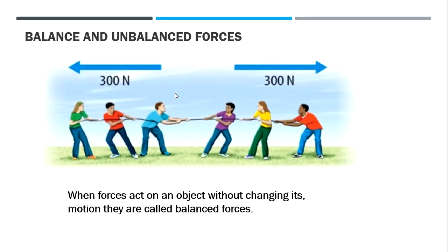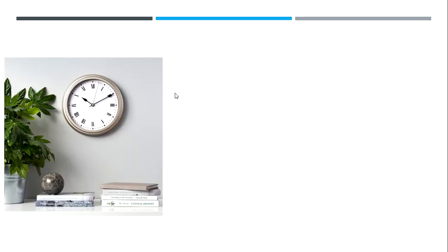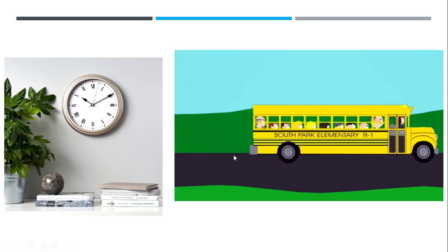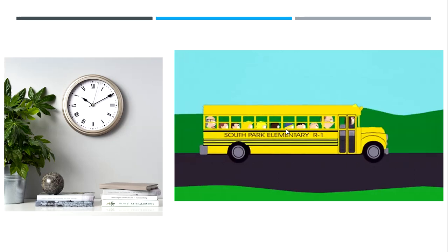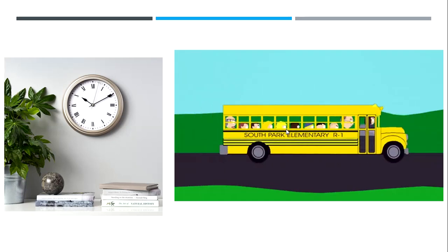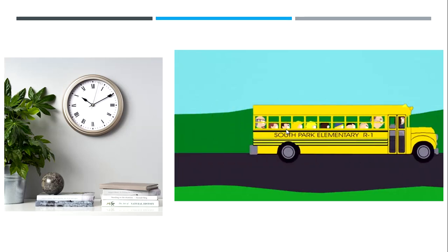There may be more than one pair of balanced forces acting on an object. For example, a clock screwed into the wall — gravity pulls it down, but the screw keeps it in place. Balanced forces can work on stationary objects like this clock. They can also work on moving objects, like a school bus moving at constant velocity — no change in velocity means the forces are balanced.